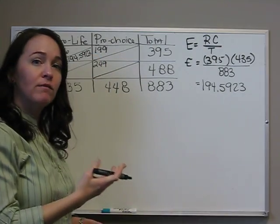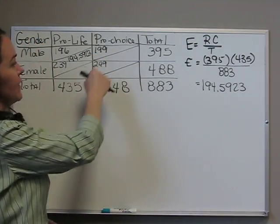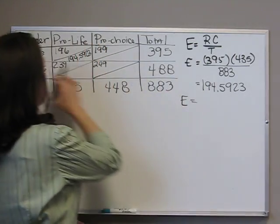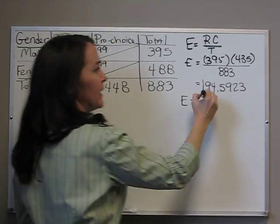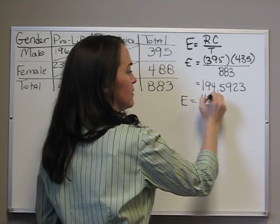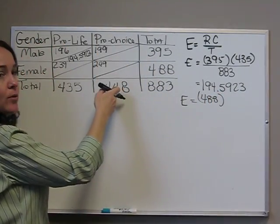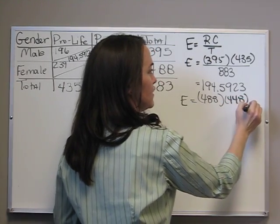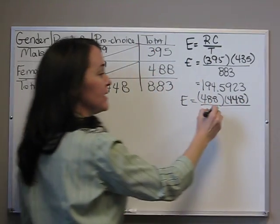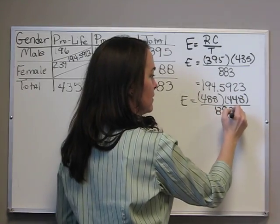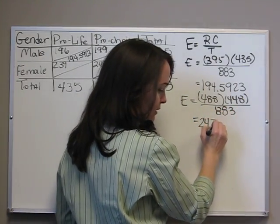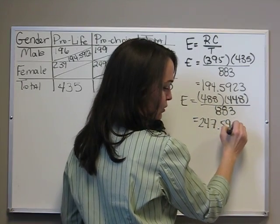I'll do one more of these. If we want to do the female pro-choice expected value: females total 488, pro-choice total 448, divided by the complete total 883. When you multiply that together, you get 247.5923.